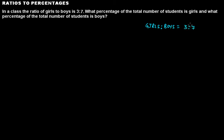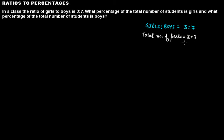To calculate the percentage, the first step is to find the fraction of girls and the fraction of boys in this class. To do this, calculate the total number of parts the ratio represents, which is the sum of the two numbers: 3 plus 7 gives us 10 parts.